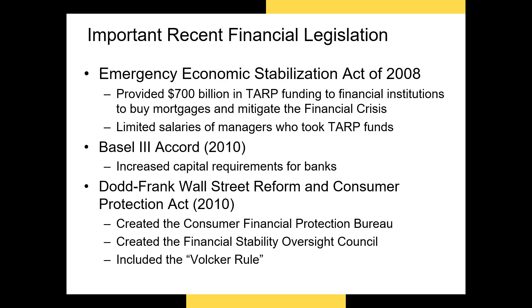The Dodd-Frank Act mandated many changes to the financial industry in the United States. First, it created the Consumer Financial Protection Bureau, or CFPB, which was tasked with protecting consumers from predatory interest rates and monitoring cases where financial intermediaries might have broken the law. Dodd-Frank also created the FSOC, or Financial Stability Oversight Council, a collection of the top regulators in the United States. The objective of this council is to meet regularly to discuss emerging threats in the U.S. economy and prevent those threats from causing another crisis like the one in 2008.